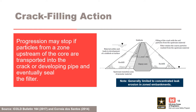Progression may stop if particles from a zone upstream of the core are transported into the crack or developing pipe and eventually seal the filter. One purpose of transition zones is to provide a source to feed material into a crack in the core to prevent piping. For crack stopping to occur, there must be a filter or transition downstream of the core to trap the eroded particles, provided the leakage flow is not too great to break out or move around the healed zone. Therefore, this node is generally limited to concentrated leak erosion in zoned embankments.